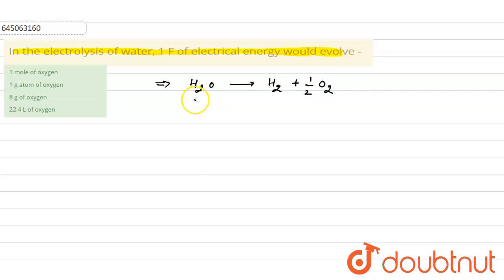Now in this reaction, first of all we will see what is the change in oxidation state. In water, hydrogen is present as H plus and oxygen is present as minus 2. So oxygen went to zero oxidation state, meaning two electrons are accepted.